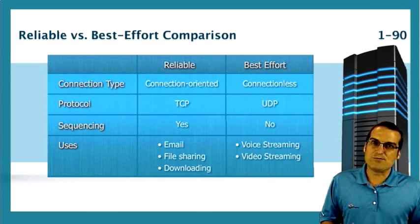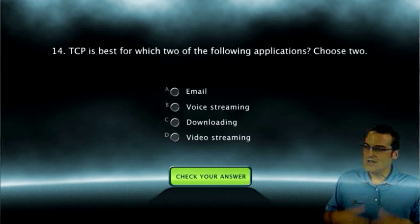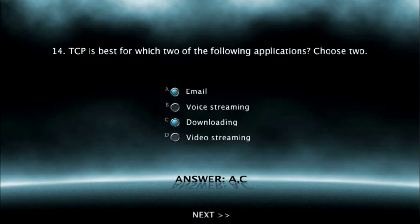Well, that's the transport layer in all of its glory. To make sure this information is really sticking for you, let's wrap up with a quick polling question out of our course. Transmission Control Protocol is best for which two of the following applications: email, voice streaming, downloading, or video streaming? Great work — it's going to be email and downloading as perfect examples of applications that can really benefit from the reliability at the transport layer.